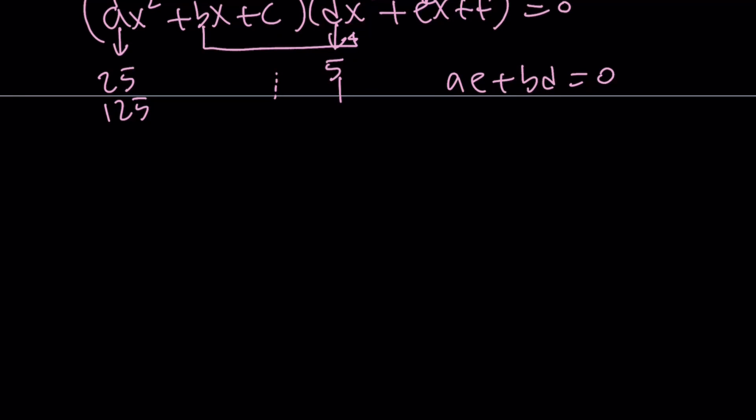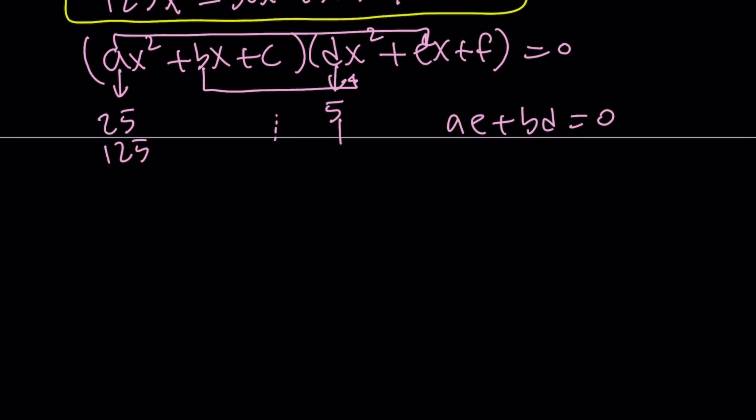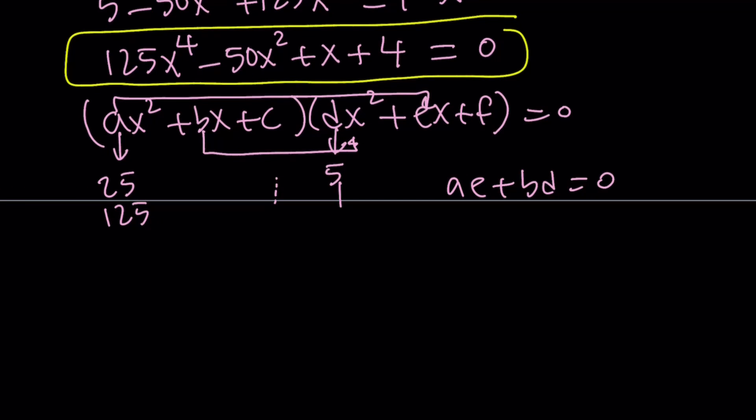With our first method, I'll just spare you all the trouble and give you the factors of this expression. If you factor this, you'll end up getting something like this: 5x squared plus x minus 1 times 25x squared, so 5 and 25 work basically, minus 5x minus 4 equals 0.